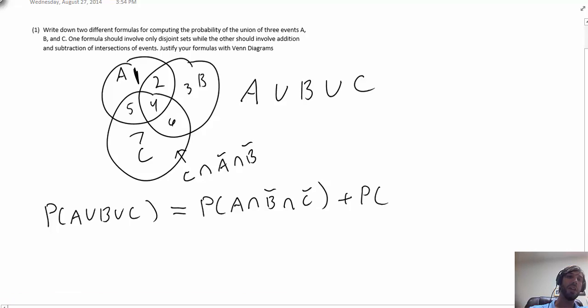Region two right here is all the events which are in A and in B but not in C. I'm not going to finish writing all the rest—I will leave that to your imagination—but just want to clarify what was meant by involving only disjoint sets in that first condition.